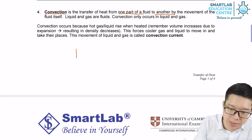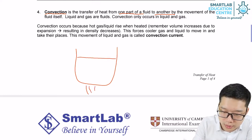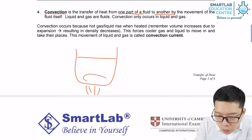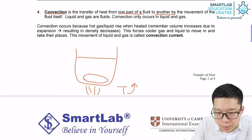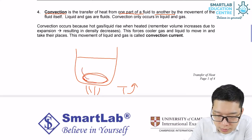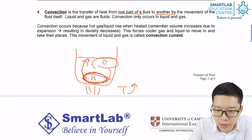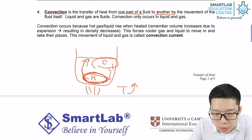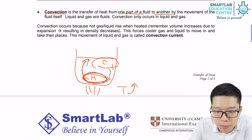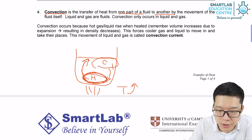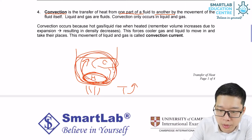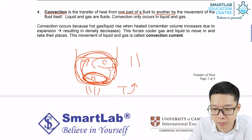What it means is when we boil water, the water below will be heated first. Once it's heated, it will go up — the bottom hot water goes up to the top, and the surface cold water drops down to the bottom, forming a cycle. The cold water comes down, gets heated, and goes up again. The hot water goes up, gets cooled, and comes down again. So eventually the whole water body will reach one certain temperature and be heated.